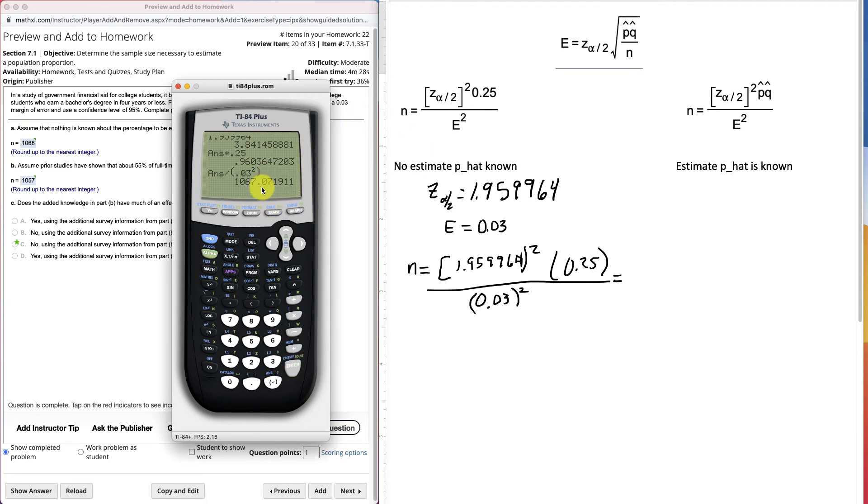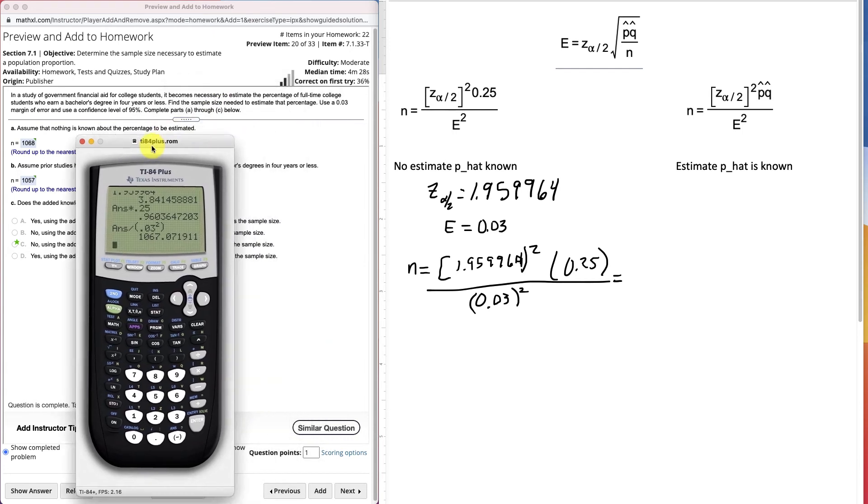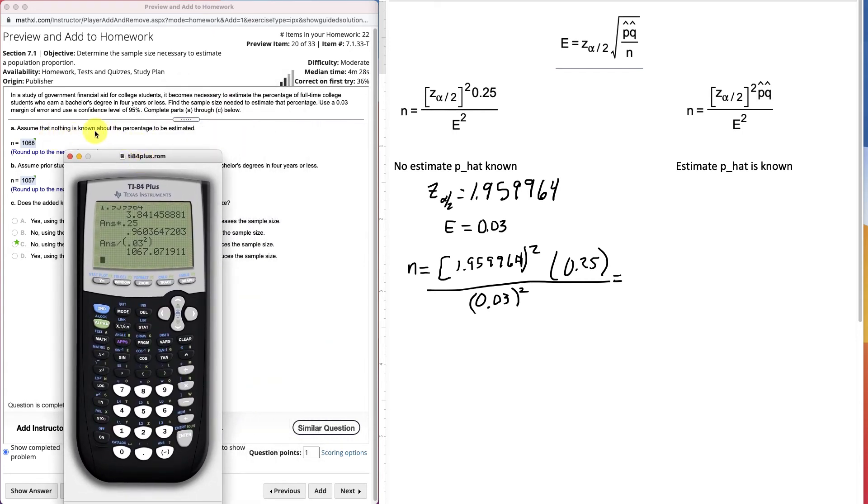Now look at this though. It's .07. But that's .07 of a person. In order to get the estimate we need though, we must go up to the next full person. So 1,068. And that's the number of people we need. So assume that there's nothing known about the percentage to be estimated. 1,068.